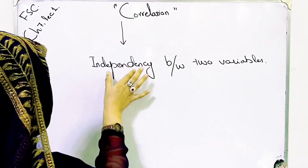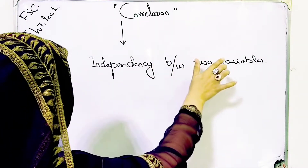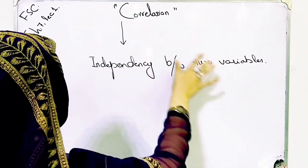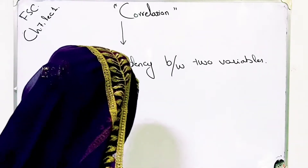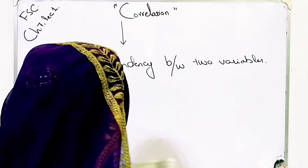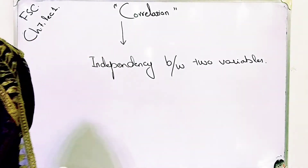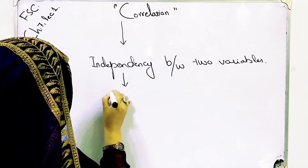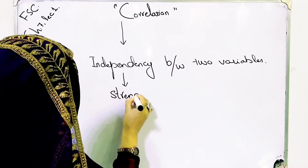In regression, you say that the dependency between two variables is called a regression, and the interdependency between two variables is called a correlation. Correlation measures the strength of the relationship between variables.